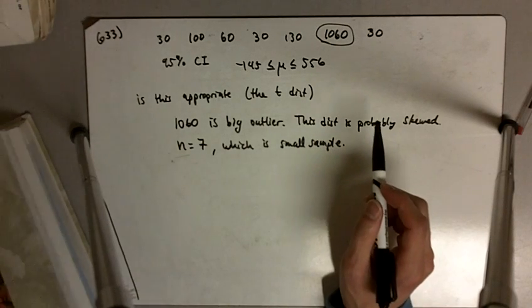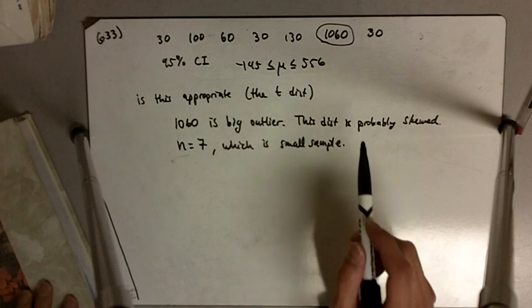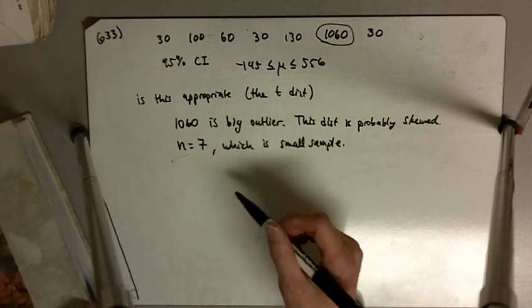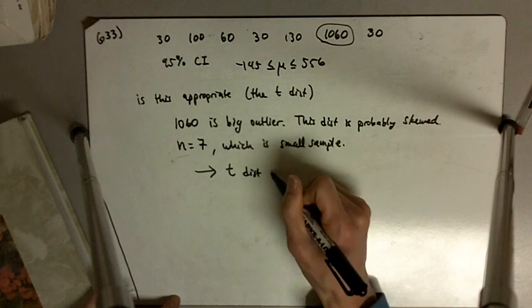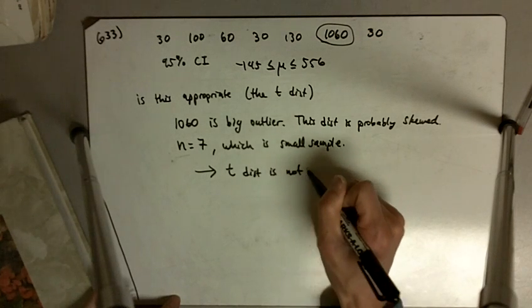So the fact that we have a skewed distribution and a small sample leads to the conclusion that the t distribution is not appropriate.